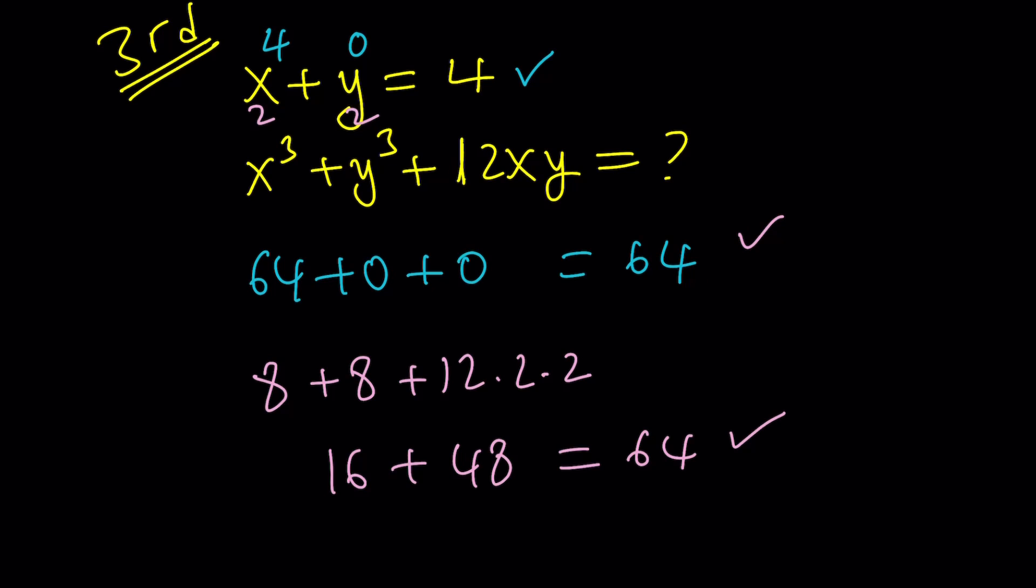Obviously this is not a proof, but it gives us more confidence, doesn't it? You can definitely try x = 3, y = 1, or even x = 1 million and y = -999,996. Anyways, that's pretty much it. This brings us to the end of this video. Thank you for watching. I hope you enjoyed it. Please let me know. Don't forget to comment, like, and subscribe. I'll see you next time. Until then, be safe. Take care and bye-bye.